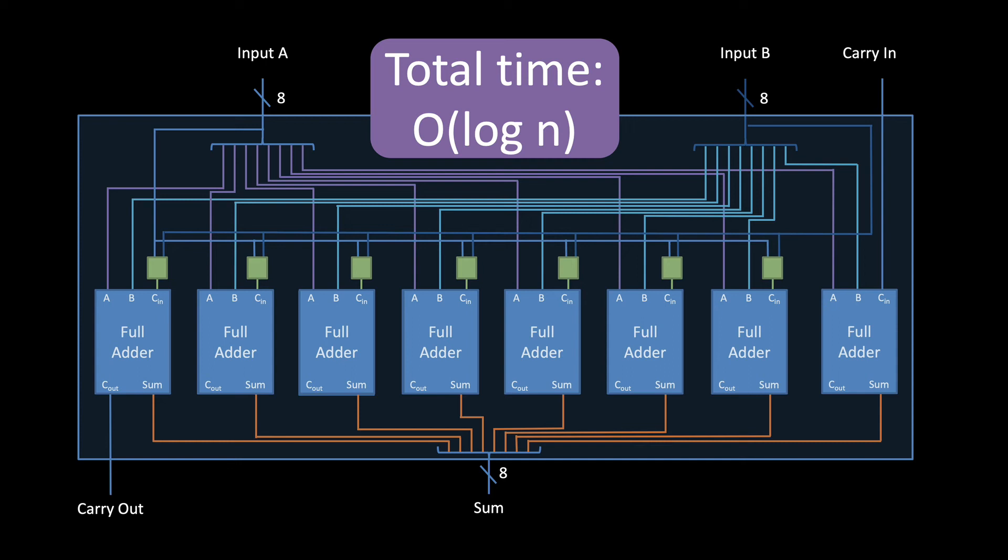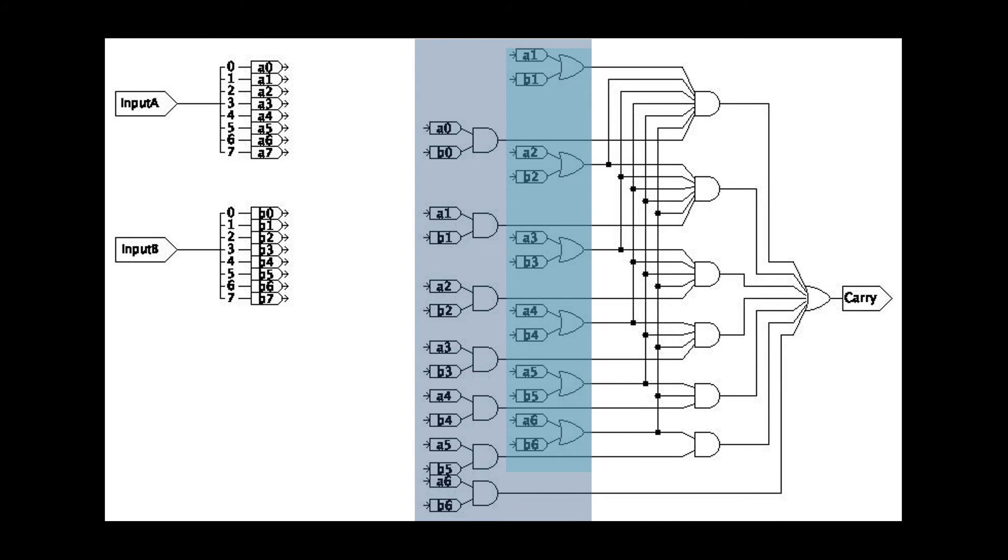We pay for this extra speed with size. The carry look ahead adder is much bigger than the corresponding ripple carry adder. So let's look at the size of this carry look ahead logic. First, there is one generate and one propagate gate for each bit of input, and this contributes a total of big O of N gates.